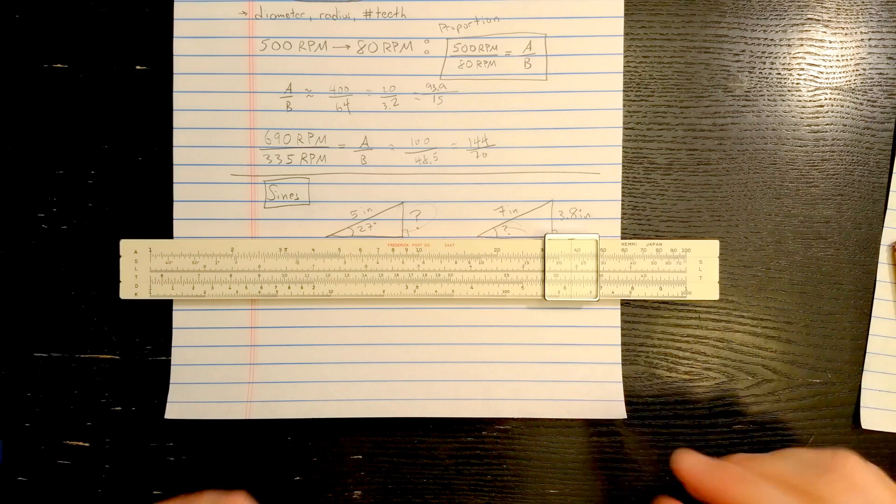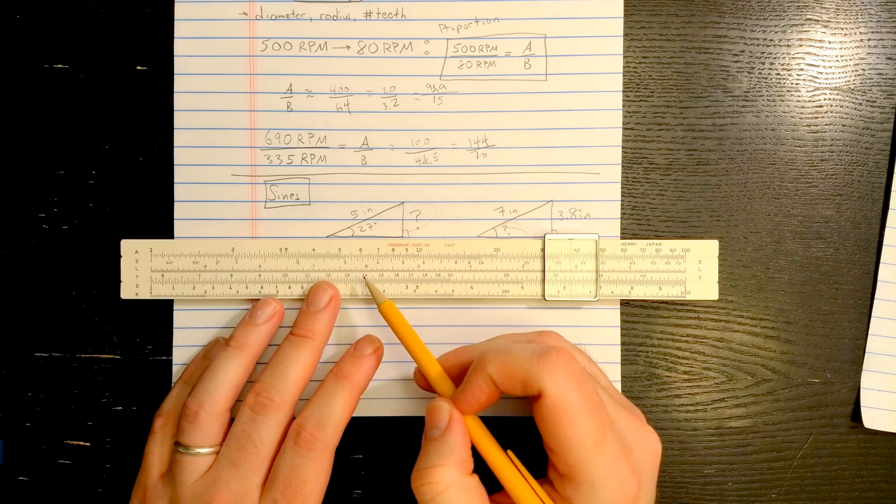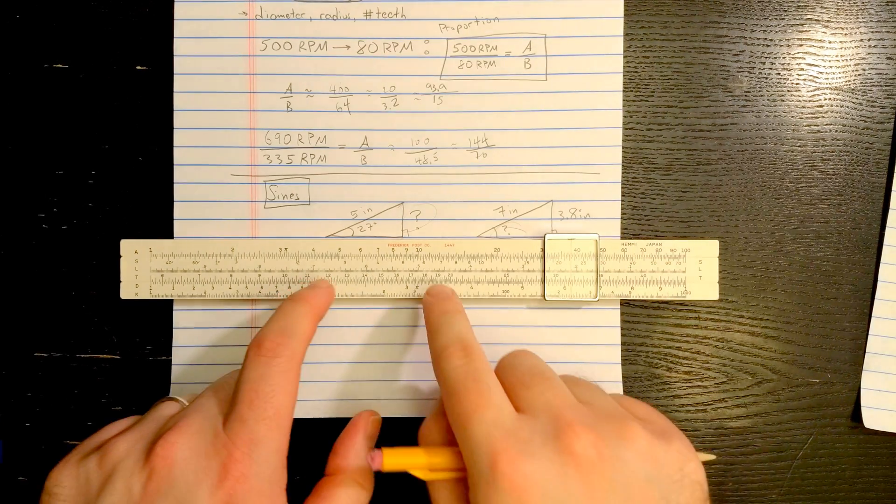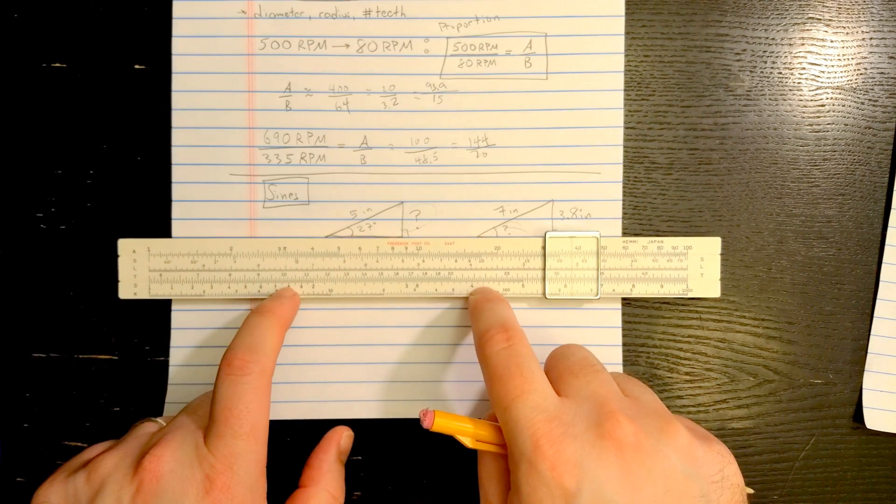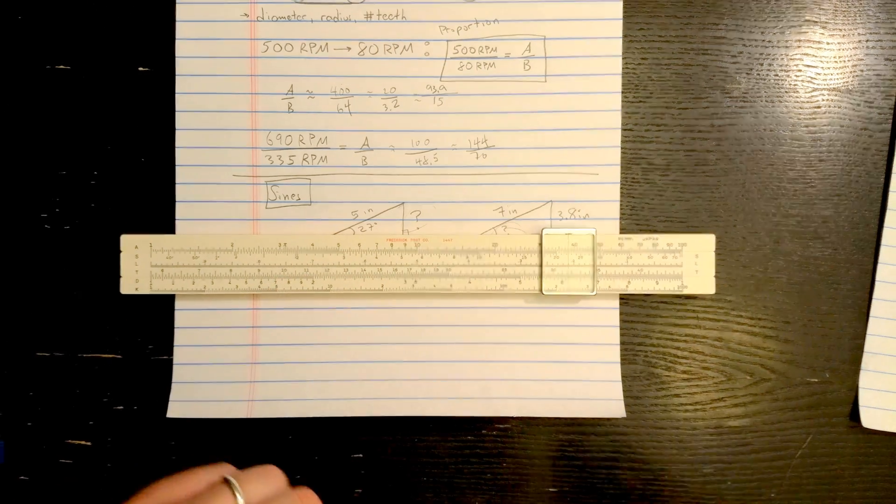Some slide rules have an S scale marked in decimal degrees, so you'd have like 3.1, 3.2, 3.4, and so on. And some slide rules have an S scale which should be used with the D scale instead. When you have that, it gives you a little bit more precision because the D scale is longer.